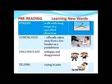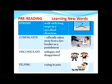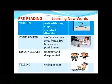Before we read the lesson, we must get familiar with some of the words we are going to read in the story — that will help us understand it. The first word is 'strides': to walk with long steps in a specified direction, and it's very clear in the picture itself. 'Confiscated': officially taken away from a lawbreaker as a punishment.